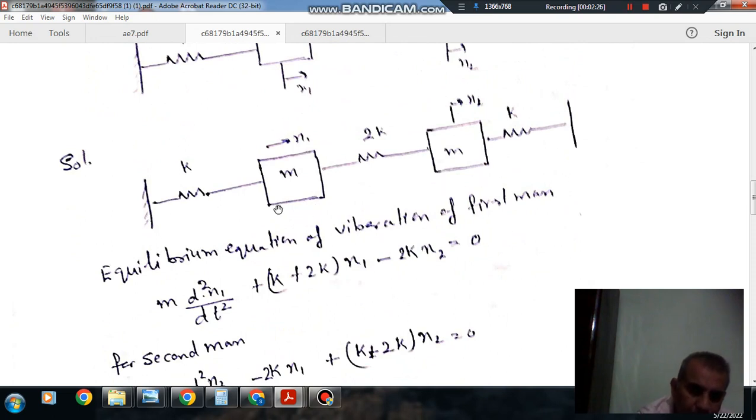So, writing the equilibrium equation of mass 1: m d²x₁/dt². For this mass, these two springs will be in parallel, so equivalent stiffness will be k plus 2k, so the restoring force is 3kx₁ for both. Due to the connection to the second mass, it will be minus 2kx₂ for this spring. The equation of vibration is m d²x₁/dt² + 3kx₁ - 2kx₂ = 0.